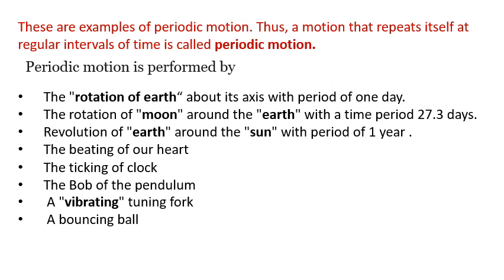All these are the examples of periodic motion. Thus a motion that repeats itself at regular intervals of time is called a periodic motion. The rotation of earth about its axis with period of one day, rotation of moon around the earth with a period of 27.3 days and so on. All these examples on this slide perform the periodic motion.